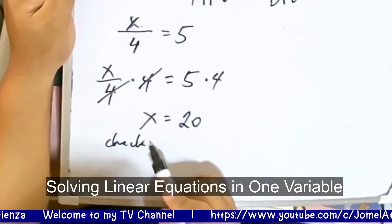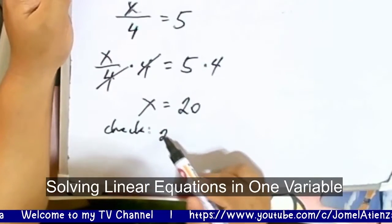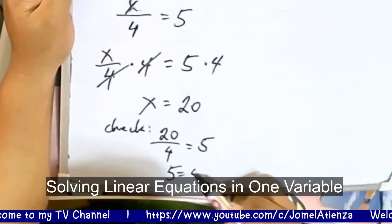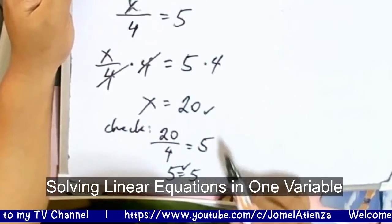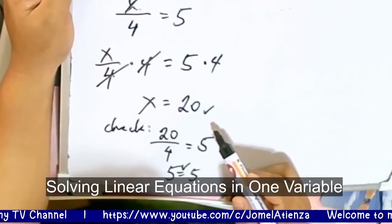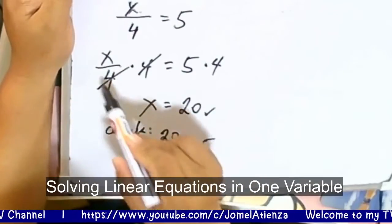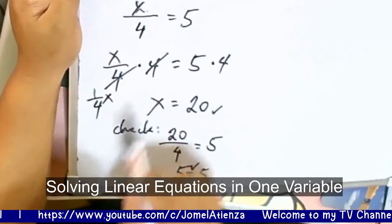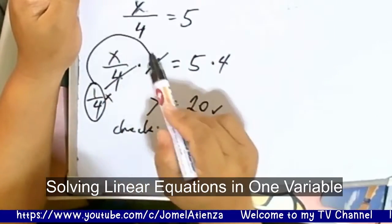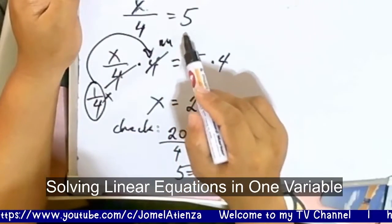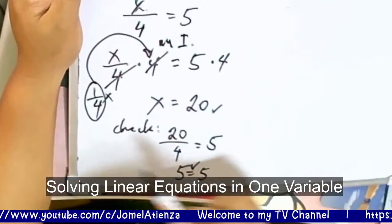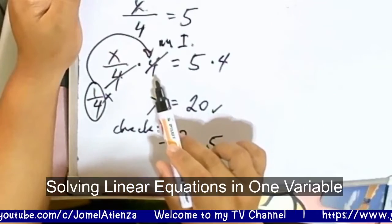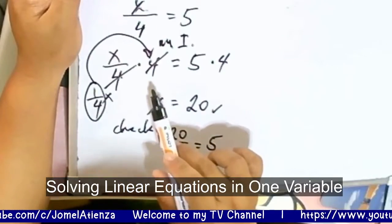Let us check: 20 over 4 is equal to 5, and 20 divided by 4 is indeed 5. Both sides are equal to 5, so x equals 20 is correct. Note that x over 4 can be written as one-fourth of x, and one-fourth is the multiplicative inverse of 4 — so this can also be treated as the division property of equality.